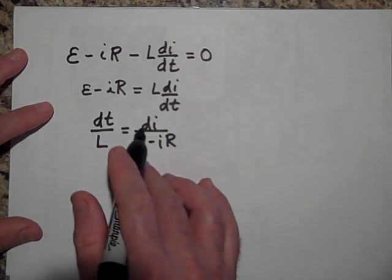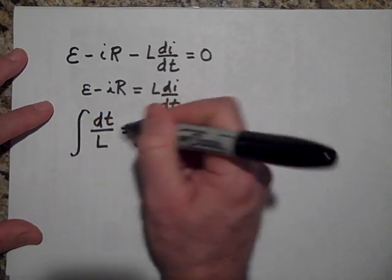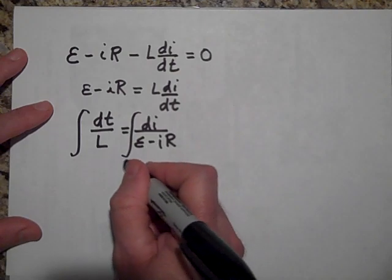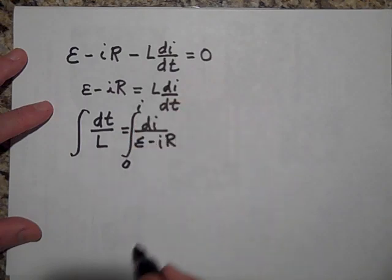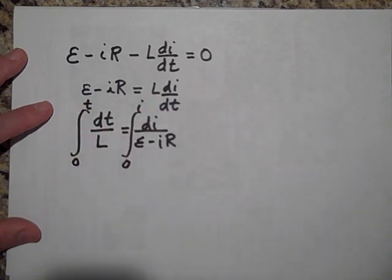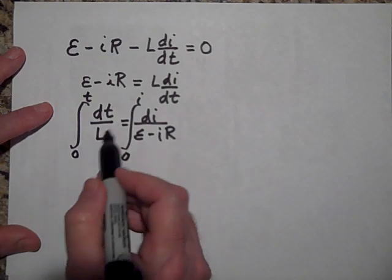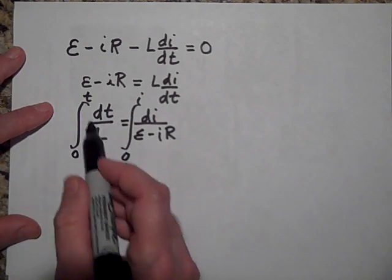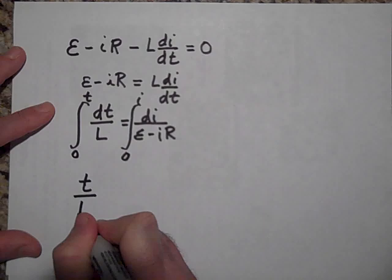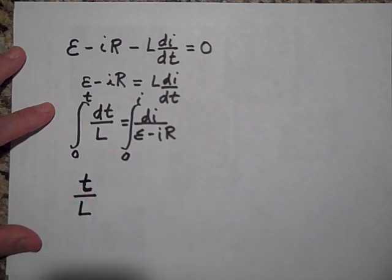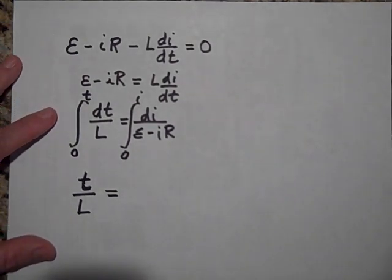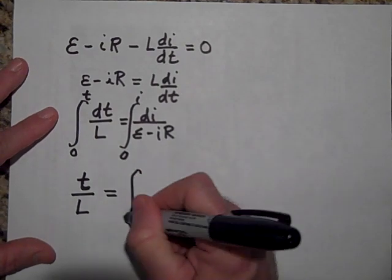Now I'm going to integrate to get rid of the dI and the dt. I'm going to integrate the left side from t equals zero to some time T, and the right side from I equals zero to some I. The anti-derivative of the left side is going to be T over L. For the right side I'm going to have to use integration by substitution.